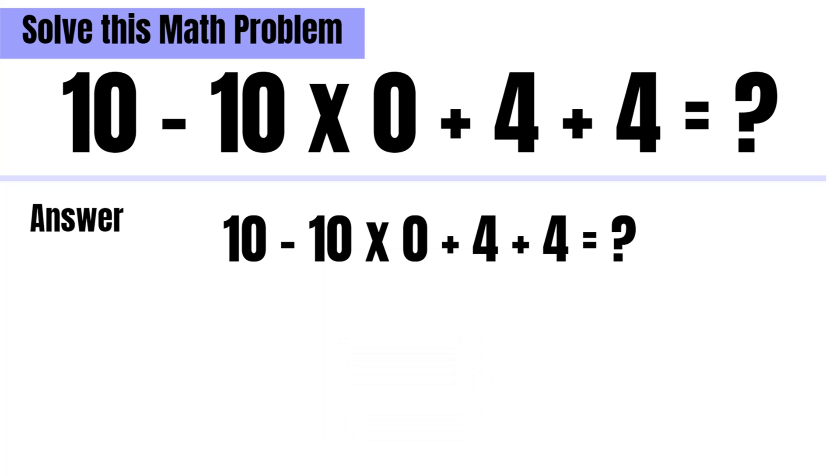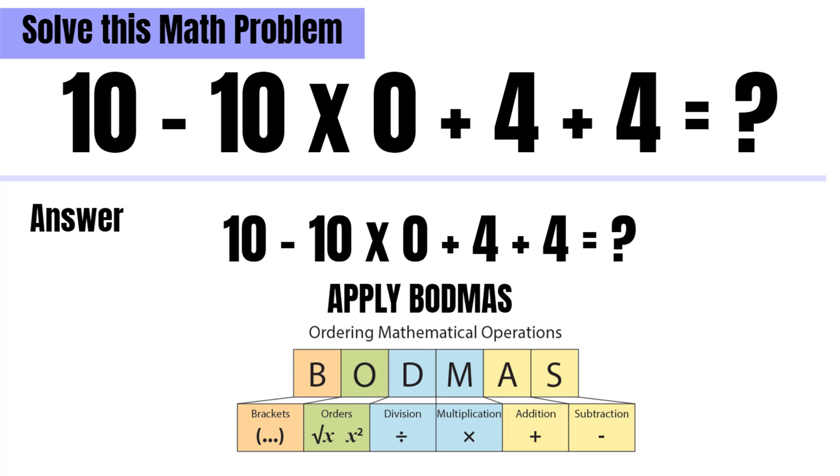So for solving this equation, we need to use BODMAS, which says first we will do the bracket and orders, then division, then multiplication, then addition and then subtraction.